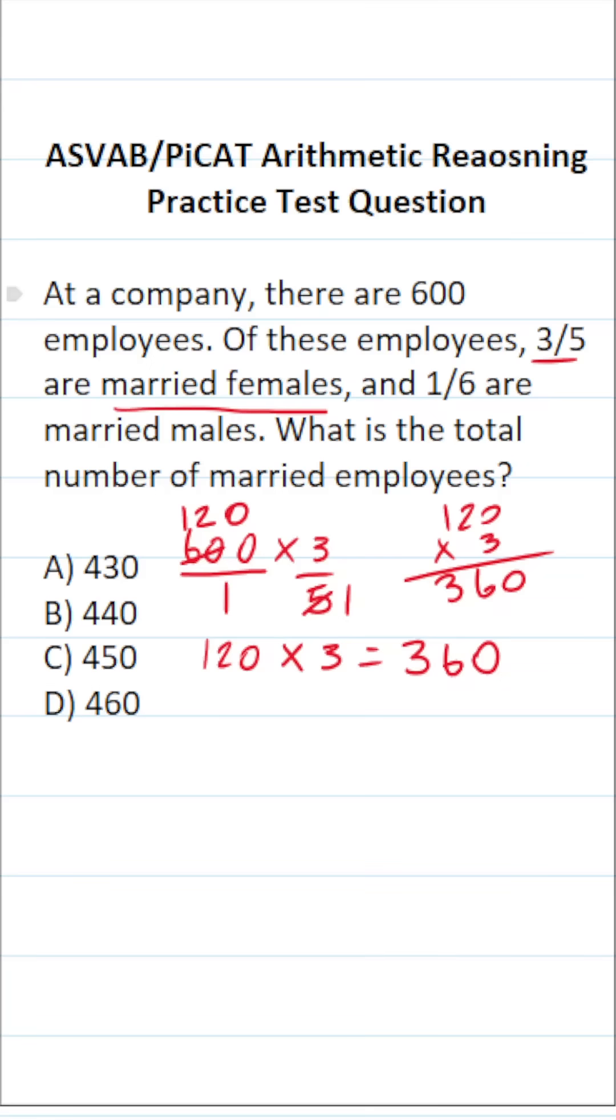Let's go ahead and find out how many of the males are married. We have 600 employees at this company. One-sixth of them are married males. So we're going to do 600 times one-sixth. In order to do this multiplication, I'm going to write 600 as a fraction by placing it over 1.